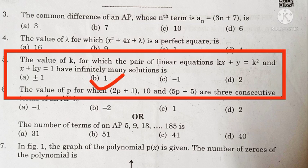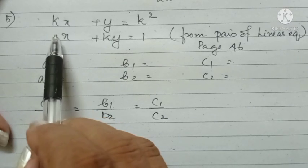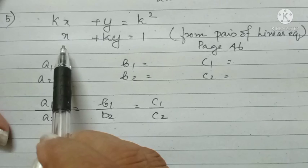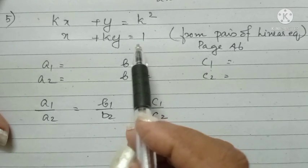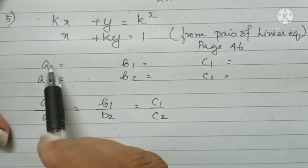Value of K, for the pair of linear equations KX plus Y equal to K squared and X plus KY is equal to 1 to have infinitely many solutions. In this question, the linear equations are KX plus Y equal to K squared, X plus KY equal to 1. Now, we are comparing the coefficients A1, A2, B1, B2, C1, C2.